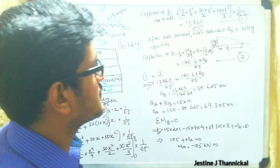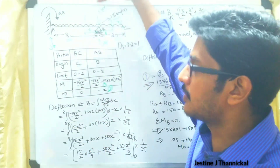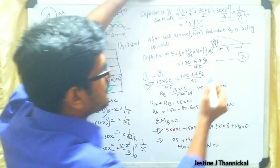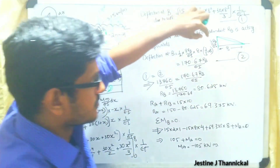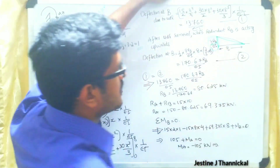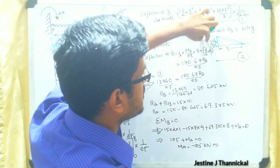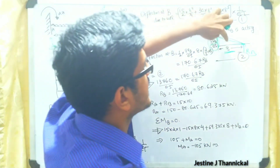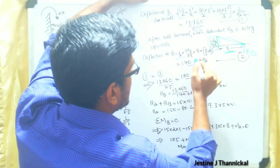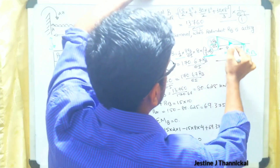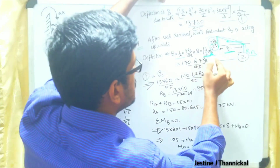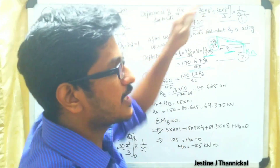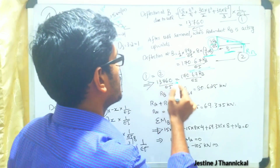Next, after removing all external UDL, we apply the redundant force RB. The bending moment diagram will act in the upward direction. Drawing the M/EI diagram, the value at point B is 8·RB / EI. Taking the area of this triangle — half multiplied by 8·RB / EI — and the center of gravity distance from point B is (2/3) × 8, we finally get 170.67·RB / EI. Since the deflection at B must be zero, we set the two equal.